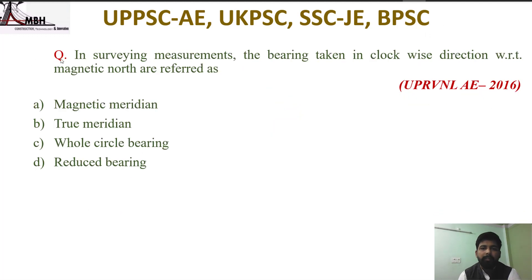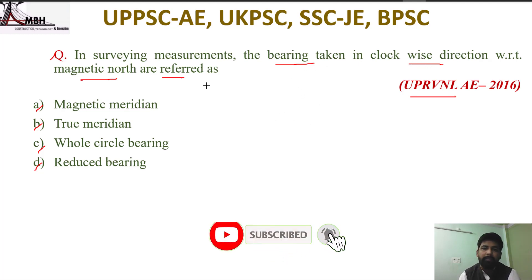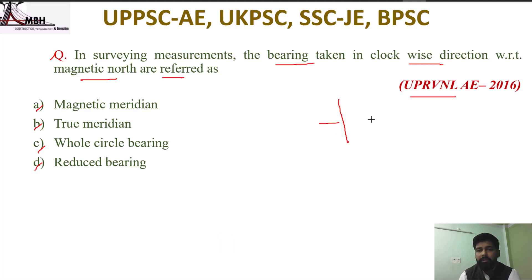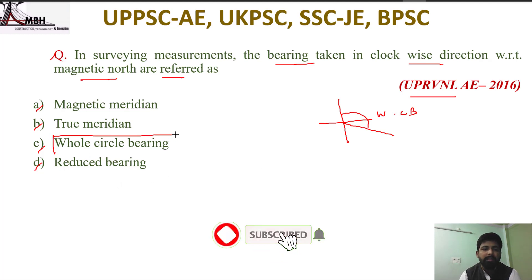Next question from UPRVNL AE 2016: the bearing taken in clockwise direction with respect to magnetic north is referred to as — options are magnetic meridian, true meridian, whole circle bearing, or reduced bearing. The bearing taken clockwise with respect to magnetic north is called whole circle bearing. Reduced bearing uses north or south, whichever is nearer to the survey line. Option C is correct.